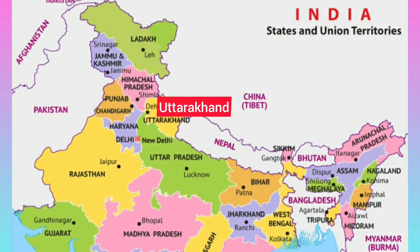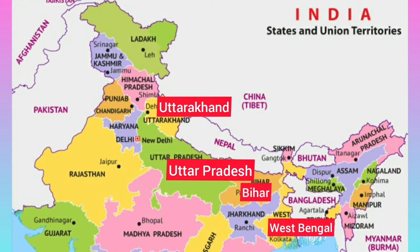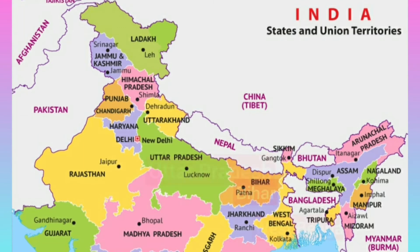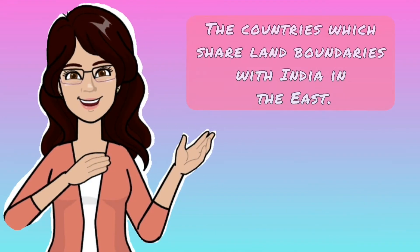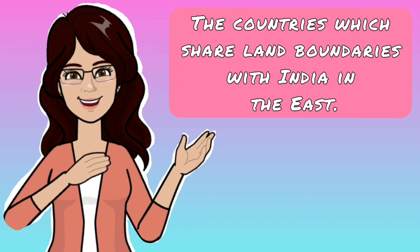The five Indian states that share boundaries with Nepal are Uttarakhand, Uttar Pradesh, Bihar, West Bengal, and Sikkim. Next is Bhutan, which shares its border with the Indian states of Assam, Arunachal Pradesh, West Bengal, and Sikkim.